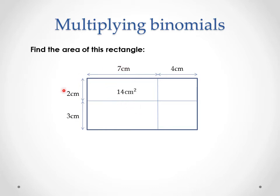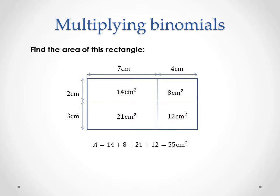So we've got that 7 times 2 is 14, 4 times 2 is 8, 7 times 3 is 21, and 4 times 3 is 12 there. So if we sum them all up, we get that the area is 55 centimetres squared.